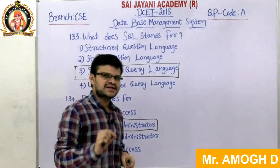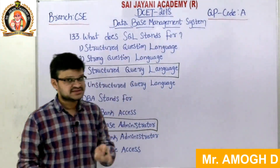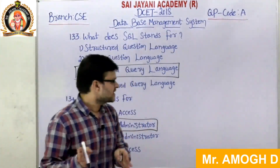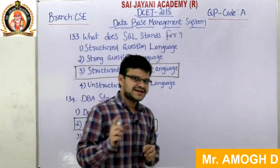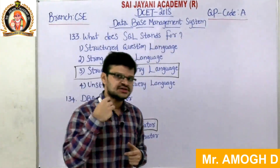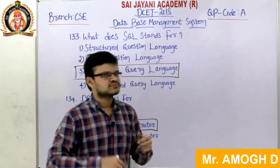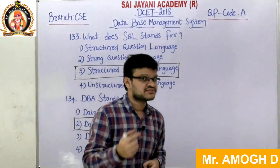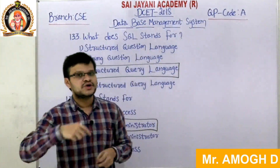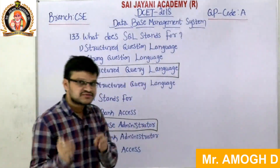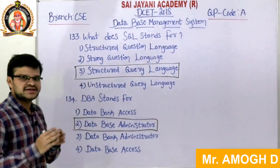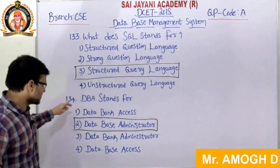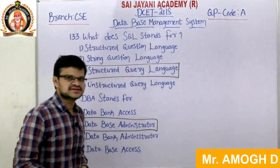DBA stands for database administrator, the person who is responsible for maintenance and operation of the database. The operations include installation of the database, configuration, upgradation, and monitoring of the database. All these functions are performed by the DBA. For question number 134, the second option, database administrator, is the right answer.